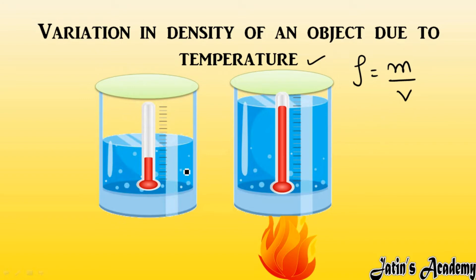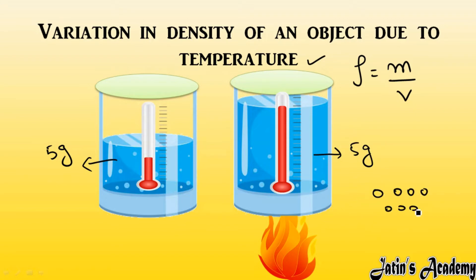For example, in this beaker I have a certain volume of water — say the mass of water is 5 grams. When we give heat to this liquid, the mass remains the same at 5 grams. But by gaining heat, each substance is going to expand — meaning volume increases. Since density and volume are inversely proportional, if volume increases, density will decrease.